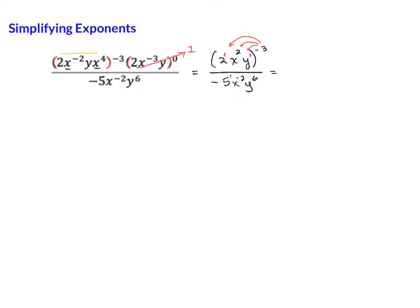So that gives us 2 to the 1 times negative 3 times x2 times negative 3, and y1 times negative 3.